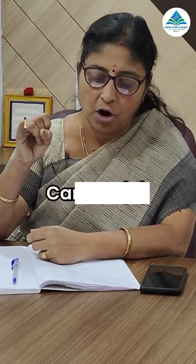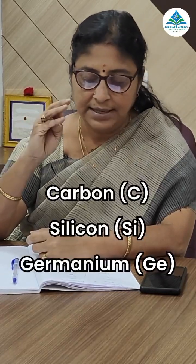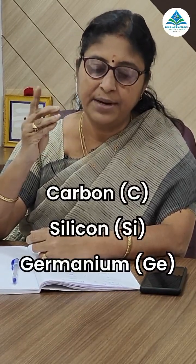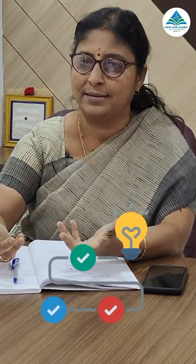How do you recall elements in the periodic table? For example, for the carbon group, use the sentence: 'Cat Should Get The Love.' C stands for Carbon, S for Silicon, G for Germanium, T for Tin, and L for Lead. With this sentence, you will be able to recall Carbon, Silicon, Germanium, Tin, and Lead.